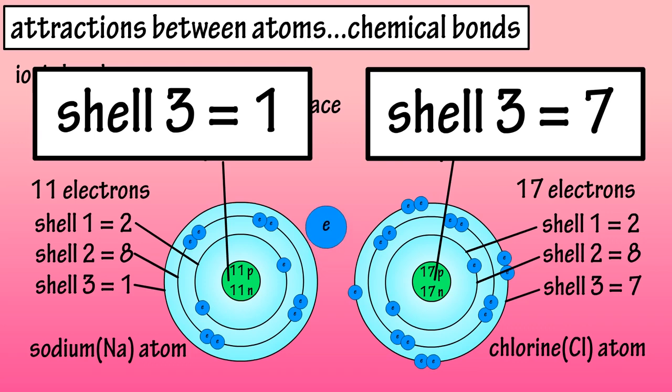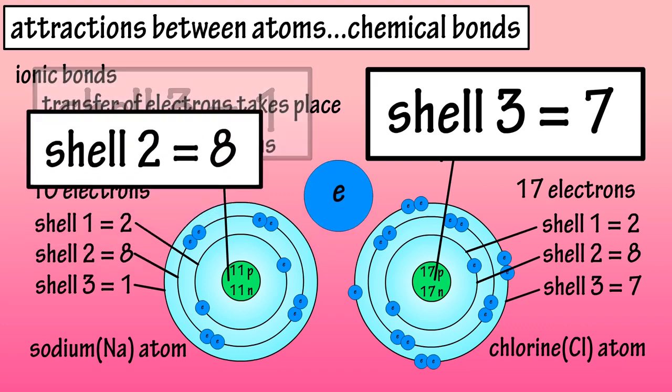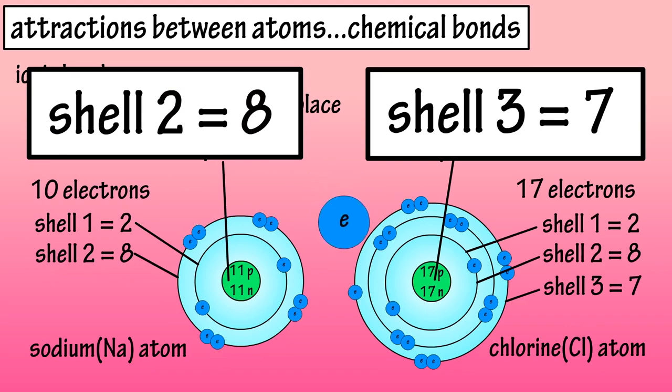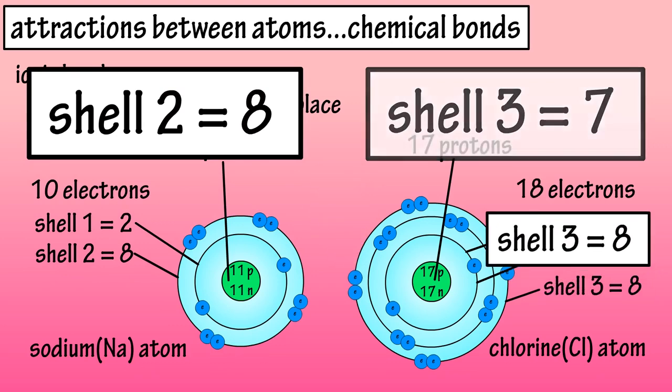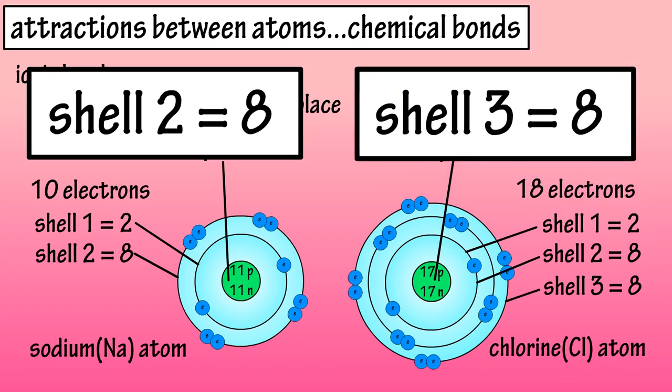So, sodium can give up one electron, and now it has eight electrons in its outer shell, and chlorine can take that electron from sodium, and that will give it eight electrons in its outer shell.